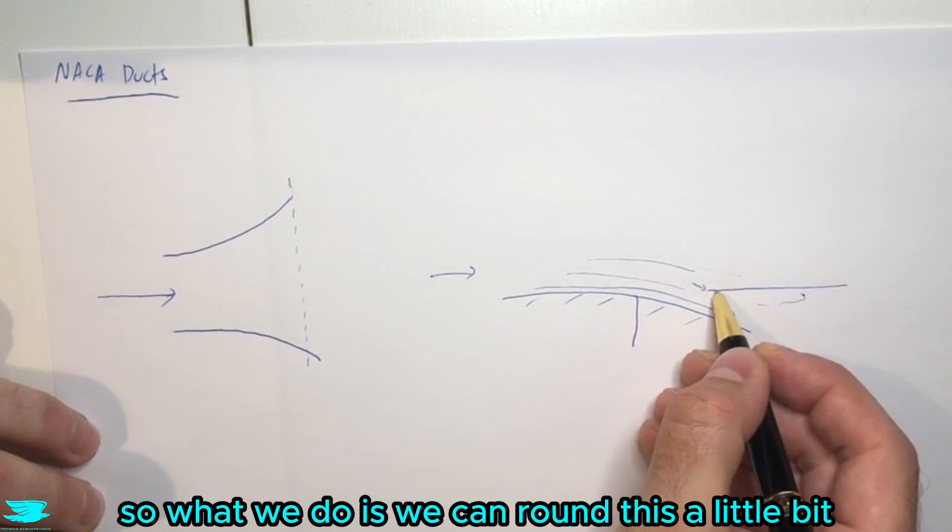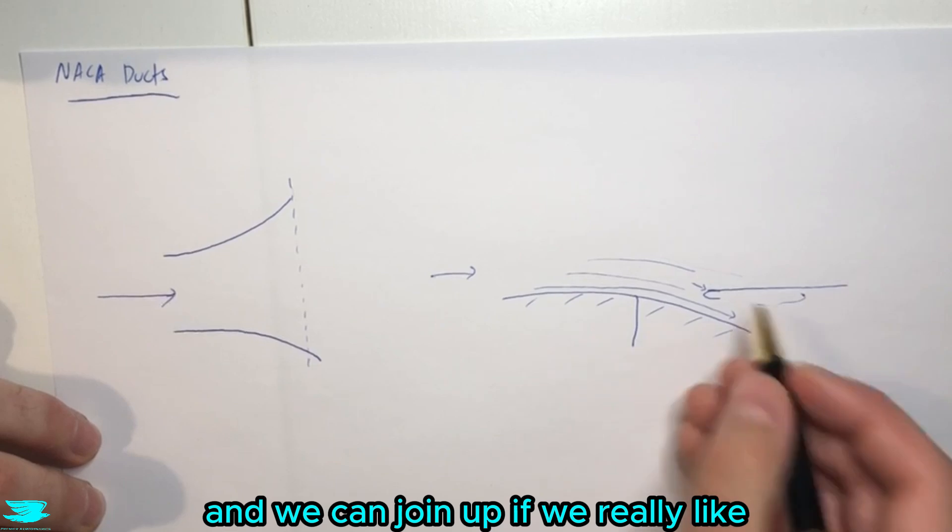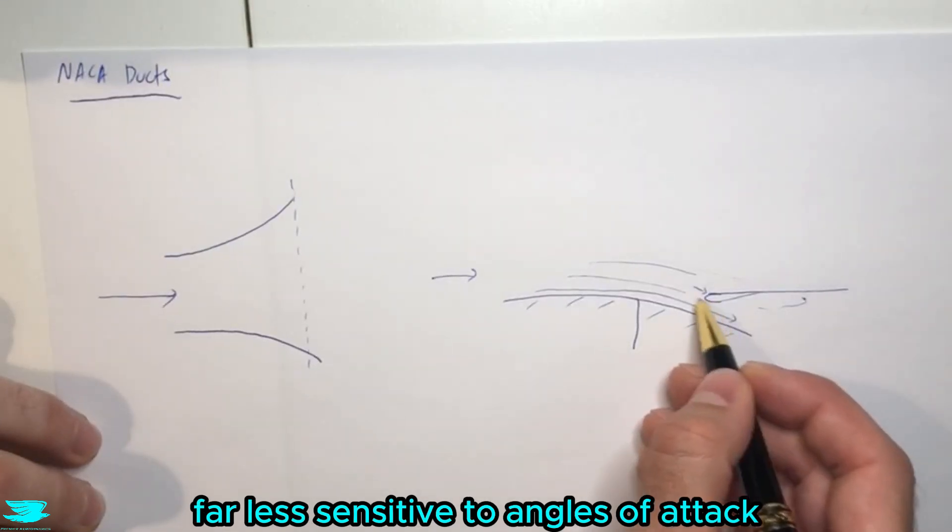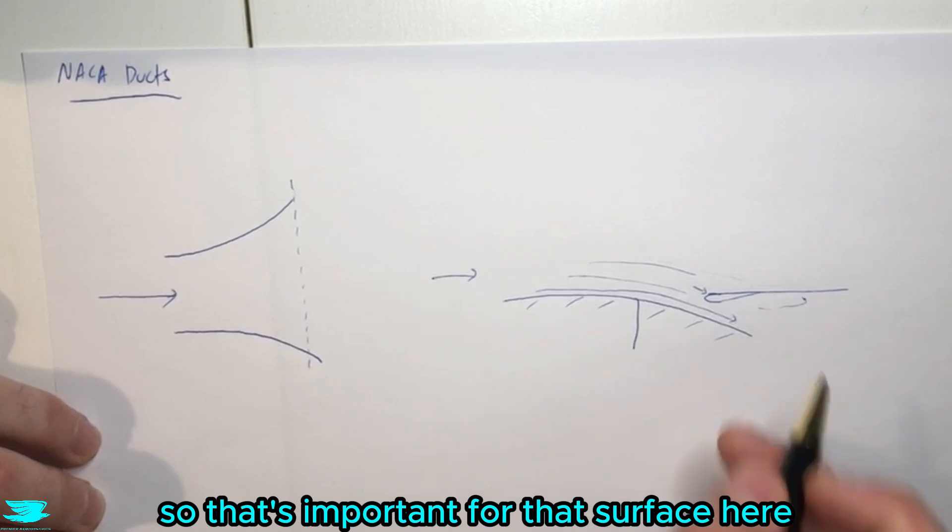So we don't want that. So what we do is we can round this a little bit so that now this is far less sensitive to, and we can join up if we really like, far less sensitive to angles of attack. So we can go to five, ten degrees and it's still fine. So that's important for that surface here.